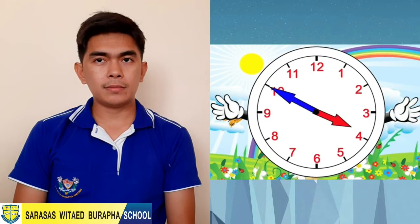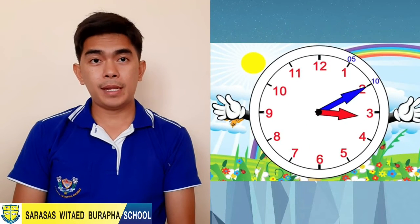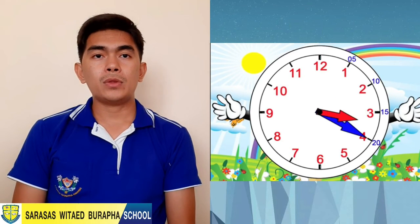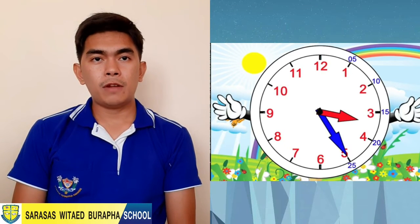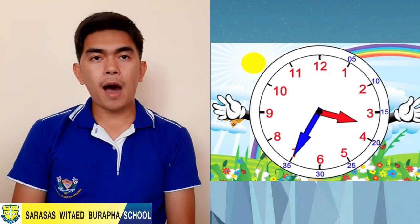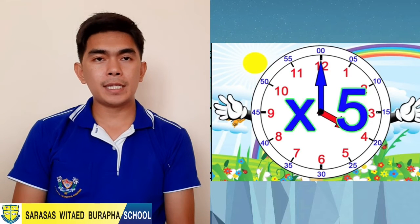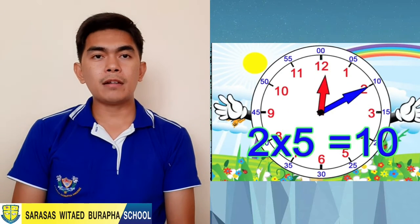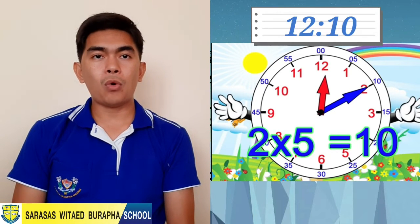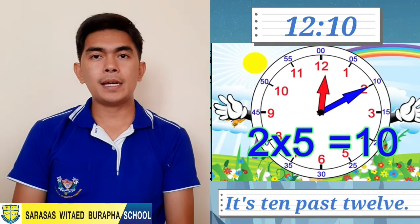There are 60 minutes in an hour. It takes a long time to count to 60, so we skip count by fives. When the big hand goes around the clock: 5 minutes, 10 minutes, 15, 20, 25, 30, 35, 40, 45, 50, 55, and back to zero, or 60. You can multiply the hour number by 5 to find out how many minutes there are. This clock says 12:10, or 10 past 12.